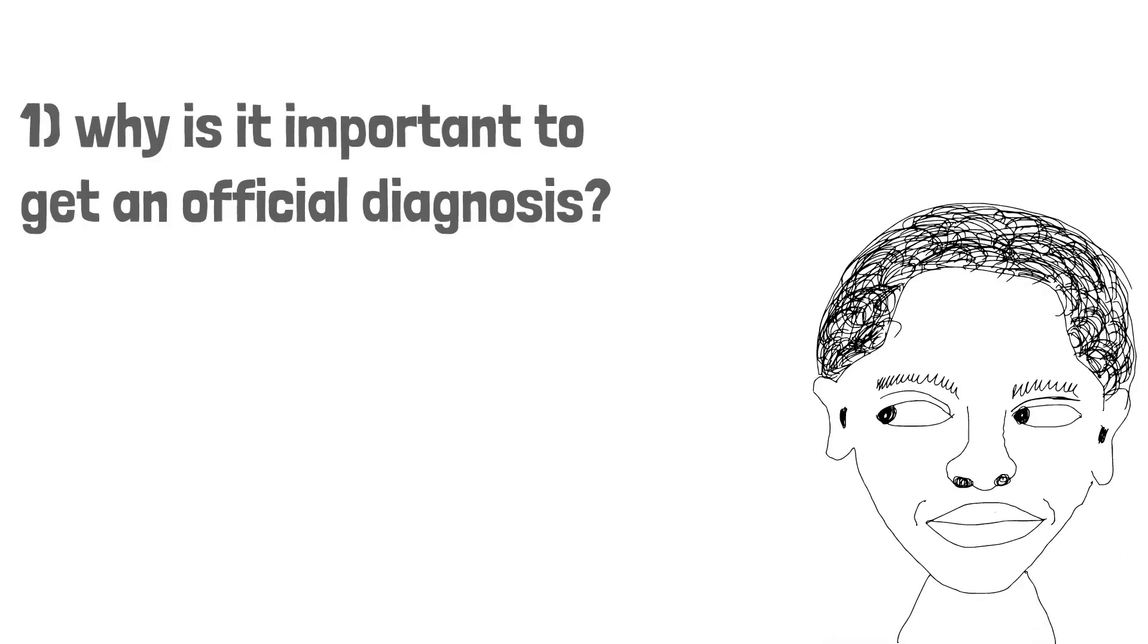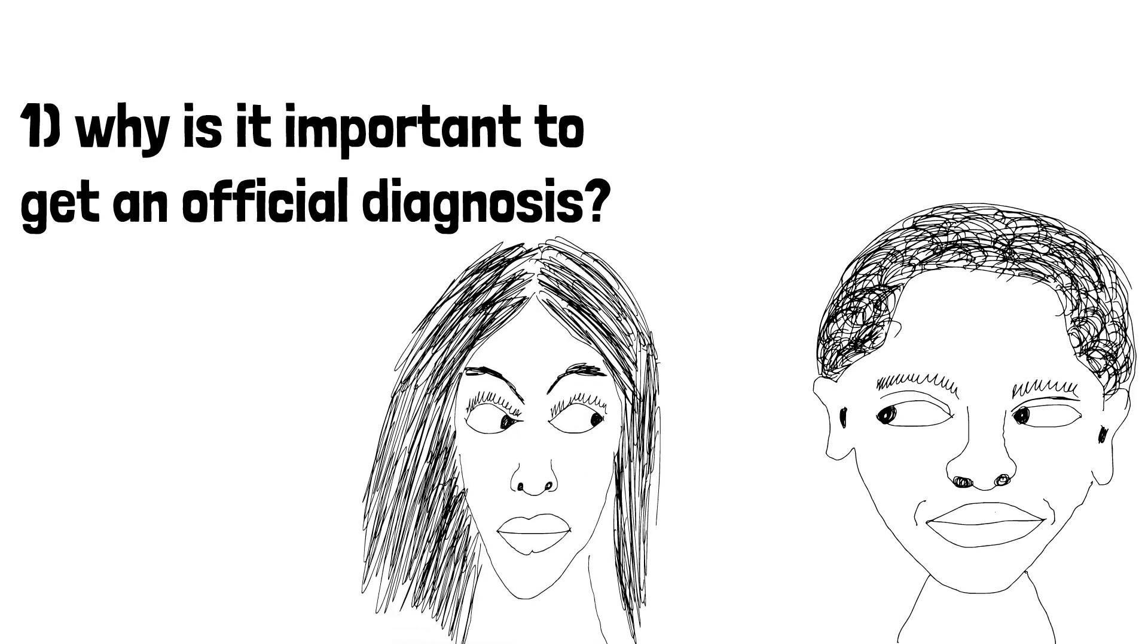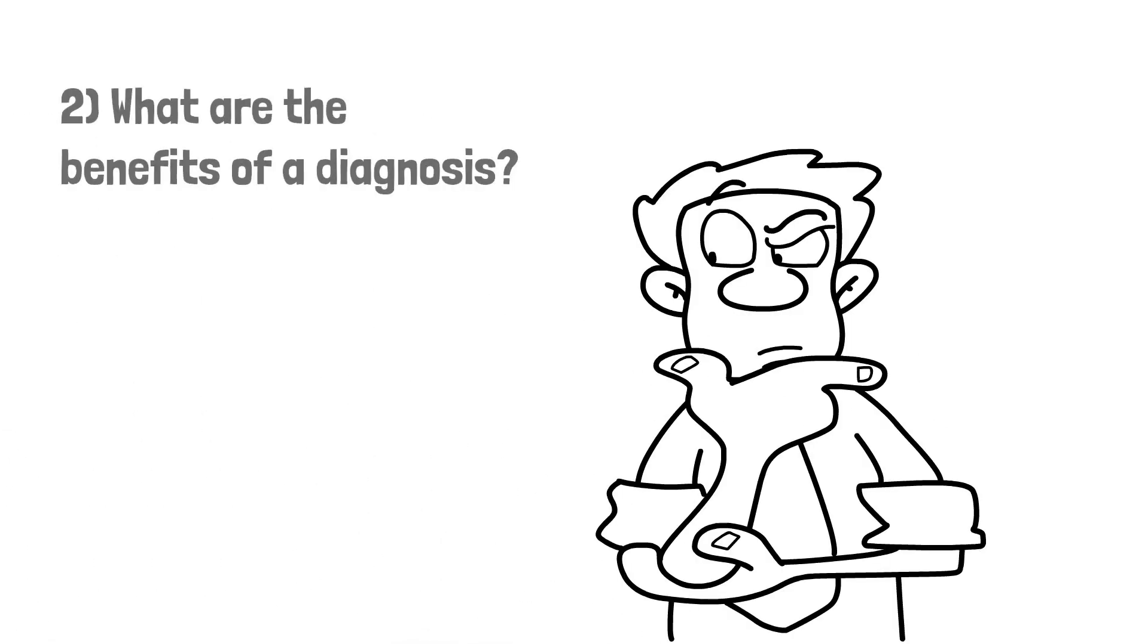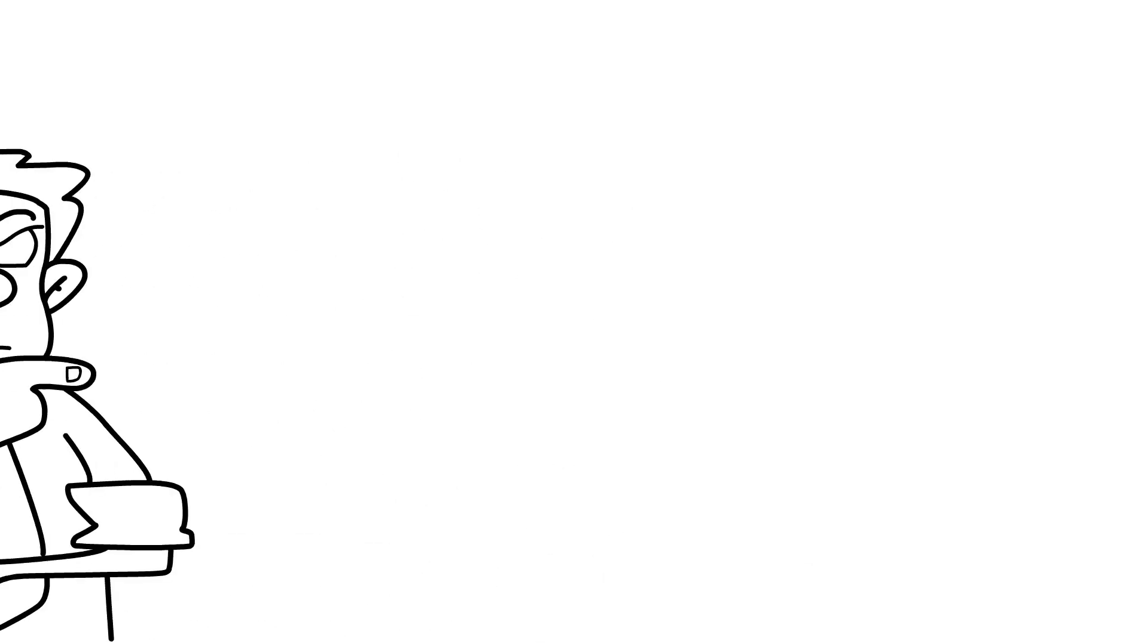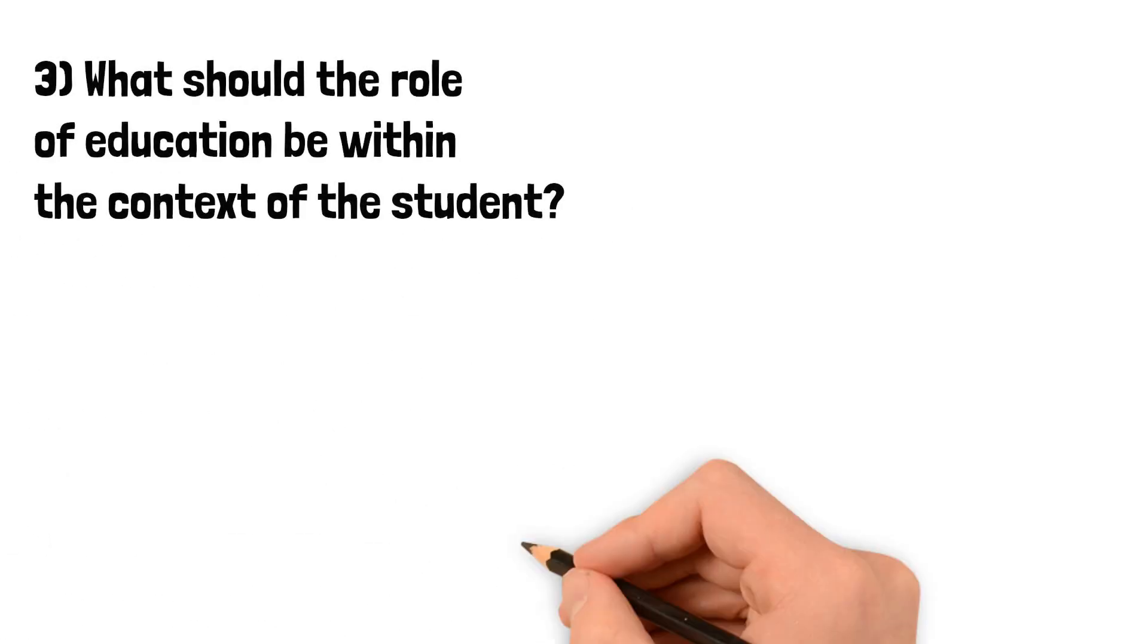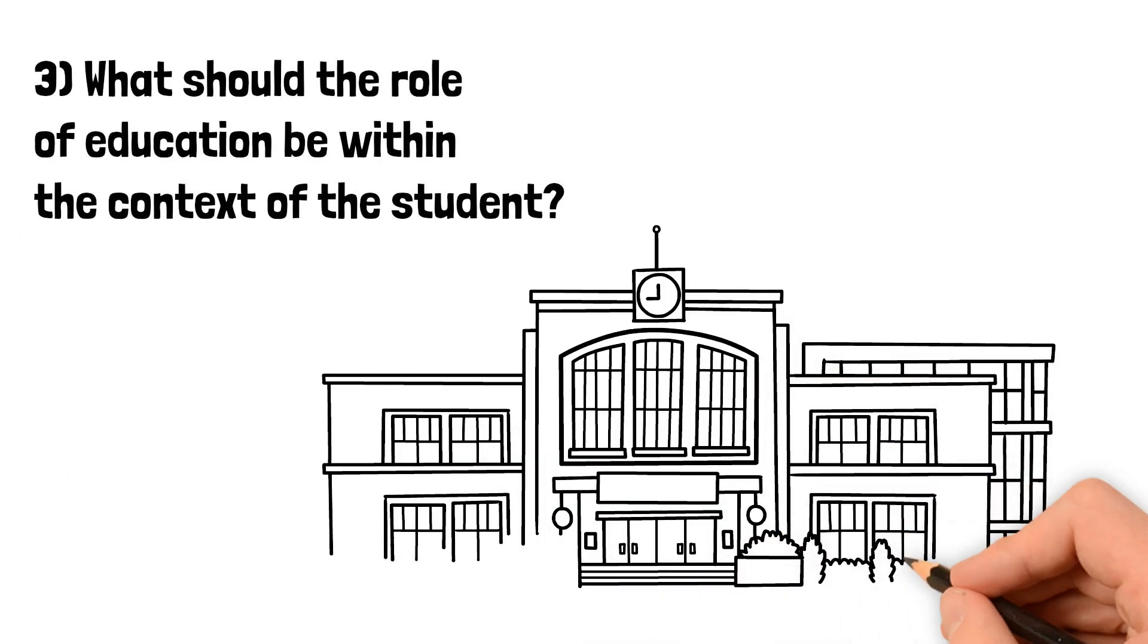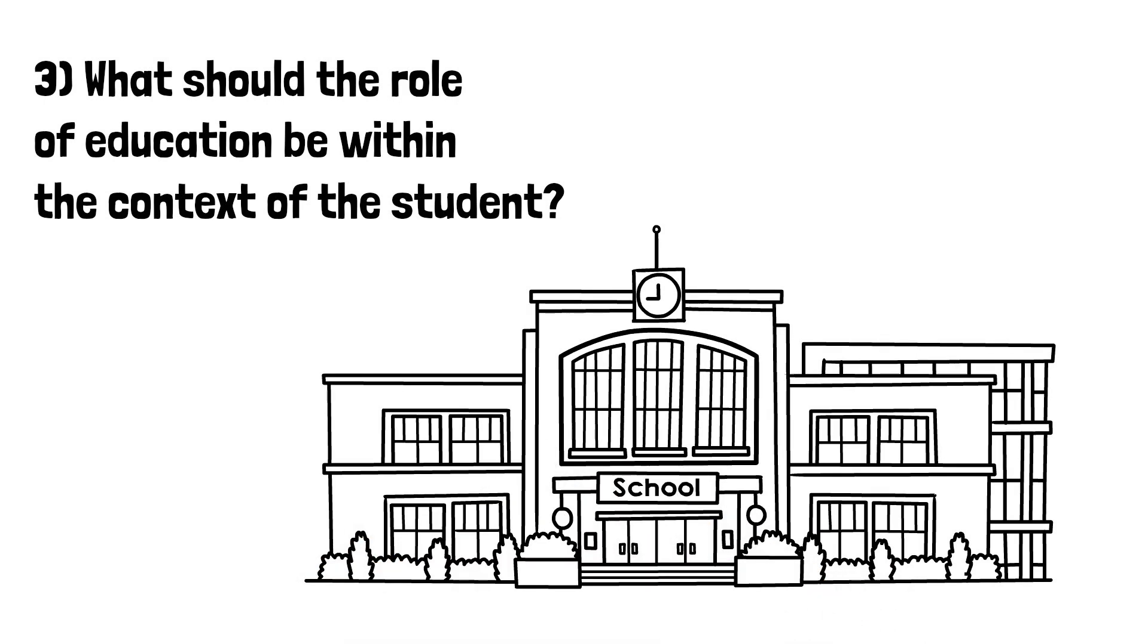So let's break down the next set of questions in phases. Phase one: why is it important to get an official diagnosis? Phase two: what are the benefits of a diagnosis? And phase three: what should the role of education be within the context of the student?